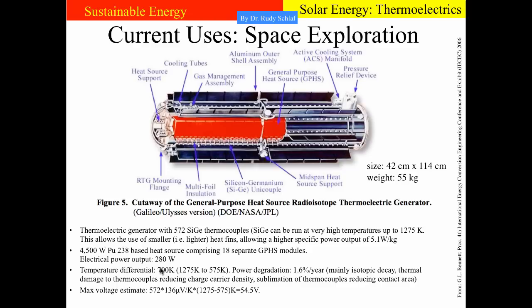This is the result of a temperature differential of 700 Kelvin — 1,275 Kelvin on the inside at the heat sources and 575 Kelvin on the heat fins pointing toward space. This power source degrades over time, with an estimated degradation of 1.6% per year. The main reason is the isotopic decay of the plutonium — as it decays there is less of it and the temperature goes down. There is also thermal damage to the thermocouples over time, which makes them less efficient.